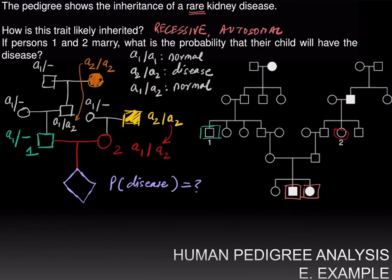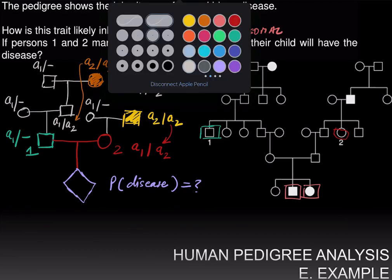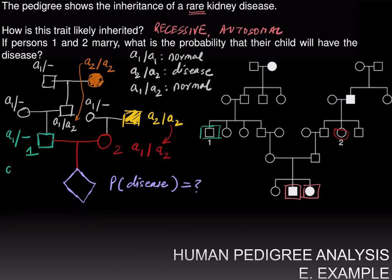Can we narrow down the genotype of individual one like we were able to narrow down individual two? As it turns out, we can't. Individual one's mom has an A1 allele and individual one's father is a heterozygote. Therefore, individual one can be either A1 over A1 or A1 over A2, which is represented by the A1 over dash notation.